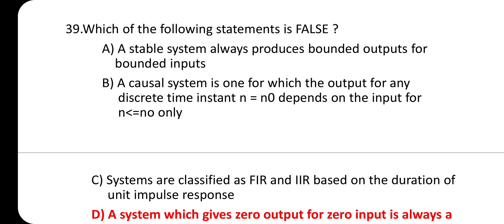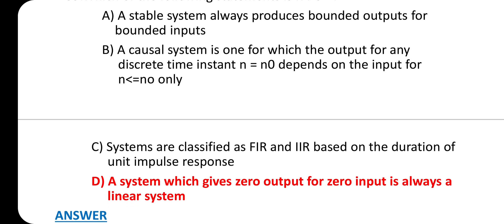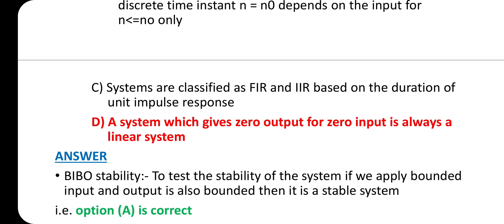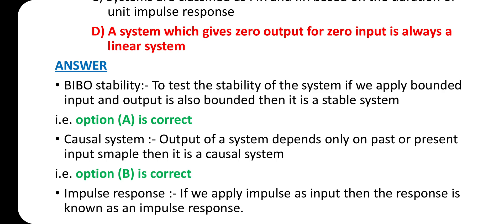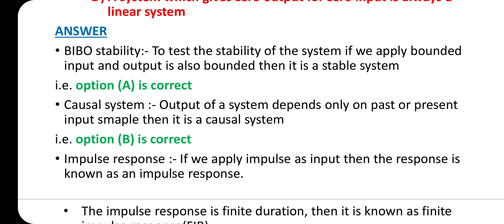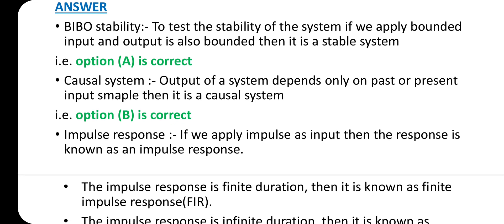Question 39: Which of the following statement is false? Option D: A system which gives zero output for zero input is always a linear system is the false statement. Explanation: BIBO stability - to test stability, if we apply bounded input and output is also bounded, then it is a stable system. Therefore, option A is correct.